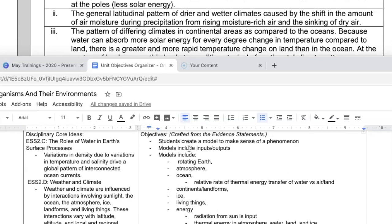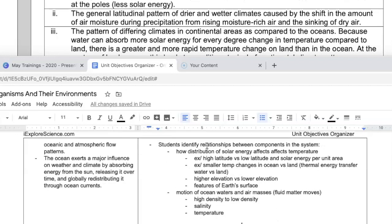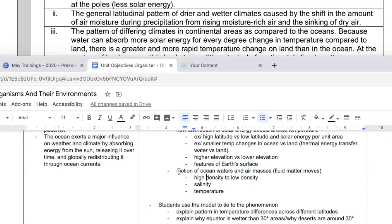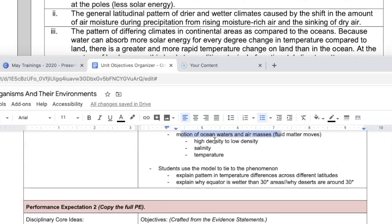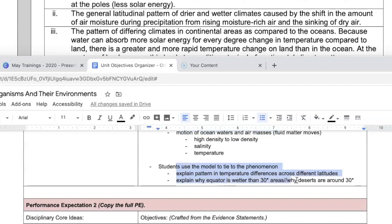So you can see that by breaking down my evidence statement I am one able to figure out things like my assessment task like these are the things I want to make sure I'm seeing in my students models. I can identify like the actual content elements I'm going to teach like I need to teach the impact of latitude. I need to teach the impact of like the thermal energy transfer in water versus land. I need to teach the impact of elevation and features of our surfaces like mountains and being near coasts and those aspects. I need to teach the motion of ocean waters and air masses, salinity, temperature, high density to low density.